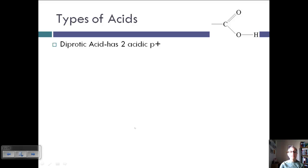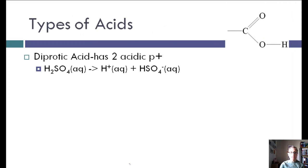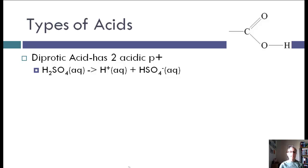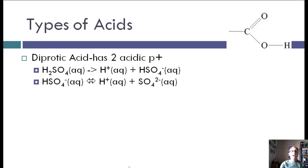A diprotic acid has two acidic protons. For example, the strong acid H2SO4 dissociates to give H+ and HSO4−. HSO4− is actually a weak acid, and its H will also come off, giving H+ and SO4²−.